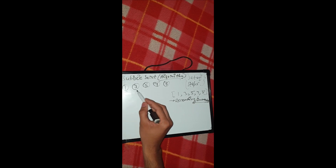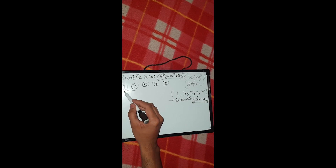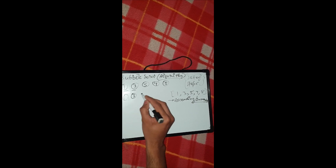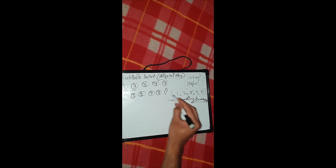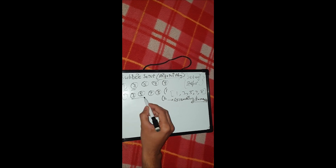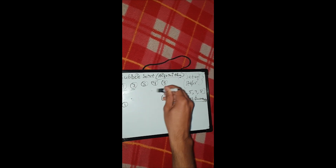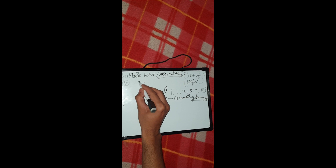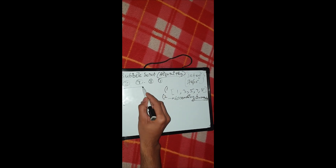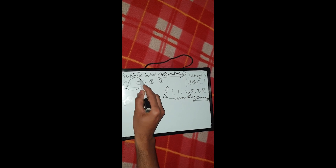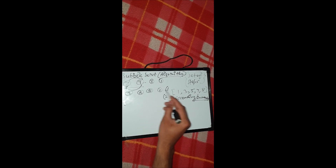We arrange them in increasing order. The procedure is: we start by taking the first two numbers, and if the second number is greater than the first, we move ahead. Let's take a clearer example: eight, seven, five, one. We take the first two numbers — seven is less than eight, so we flip them: seven, eight, five, one. That's our first step.